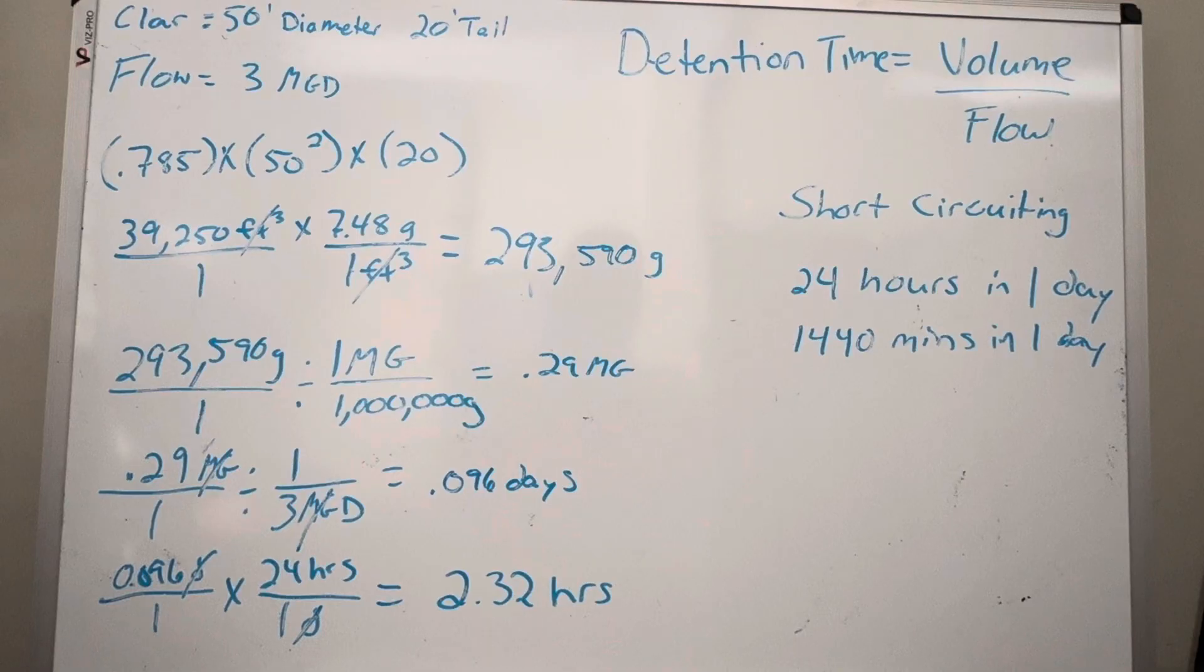You can do 0.1, it's practically the same number. I just decided not to round on this part of my math. So 0.096 times 24 hours in a day. So I've got 0.096 days times 24 hours in a day. And you can see I did the ladder math here. The days cancel out and I'm left with hours. So that's 2.32 hours. It's pretty good.